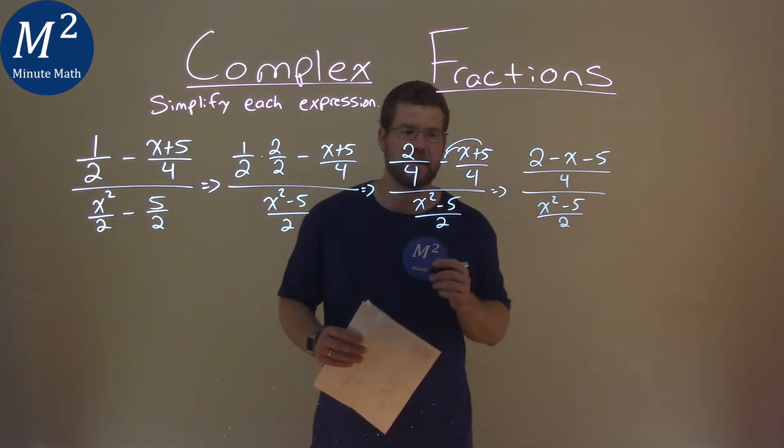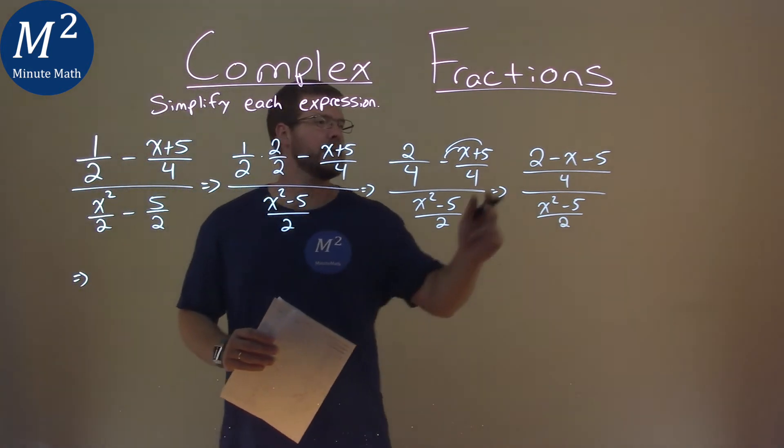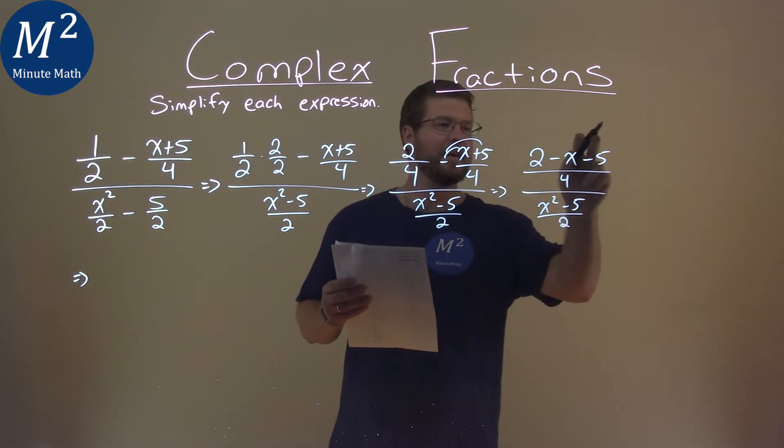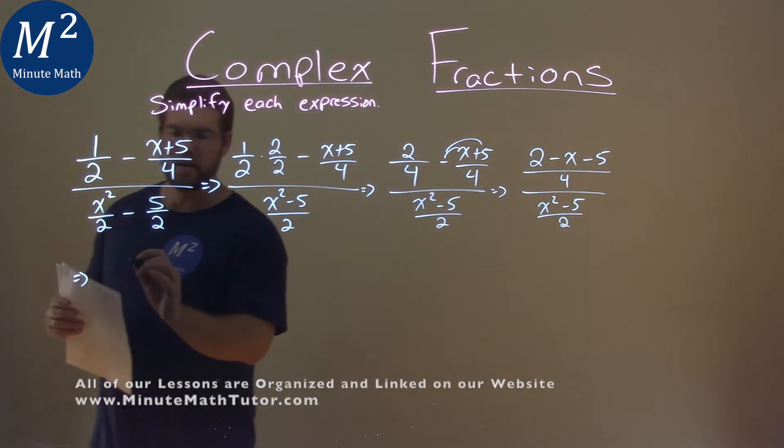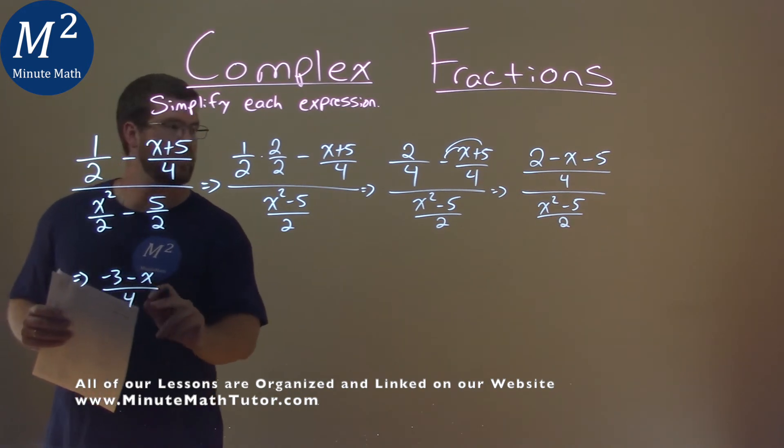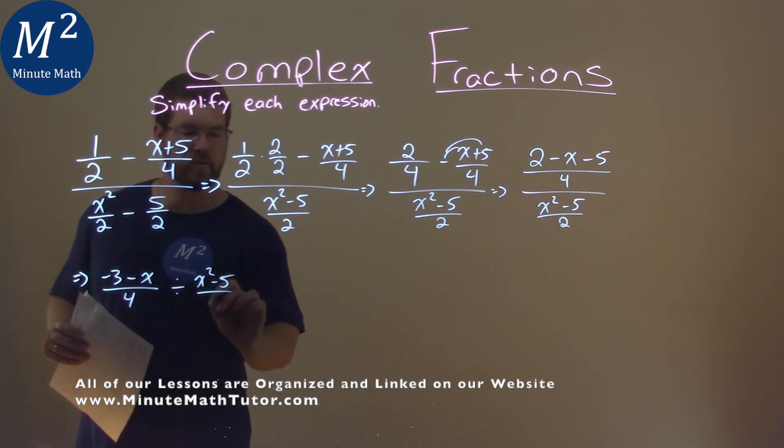Okay. A lot of work here. Let's keep on going. I'm going to do two different things here. We have a minus 5 and a minus 2. So 2 minus 5 is a minus 3. That's a minus 3 minus the x. All of that's over the 4. Then I'll write divided by x squared minus 5 over 2.